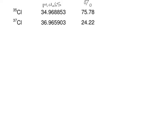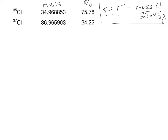If I look at the periodic table — PT — it says the mass of chlorine is 35.45 grams per mole, and that's the value I expect to get. We're going to set up this problem the same exact way, multiplying the percent by the mass for each isotope.